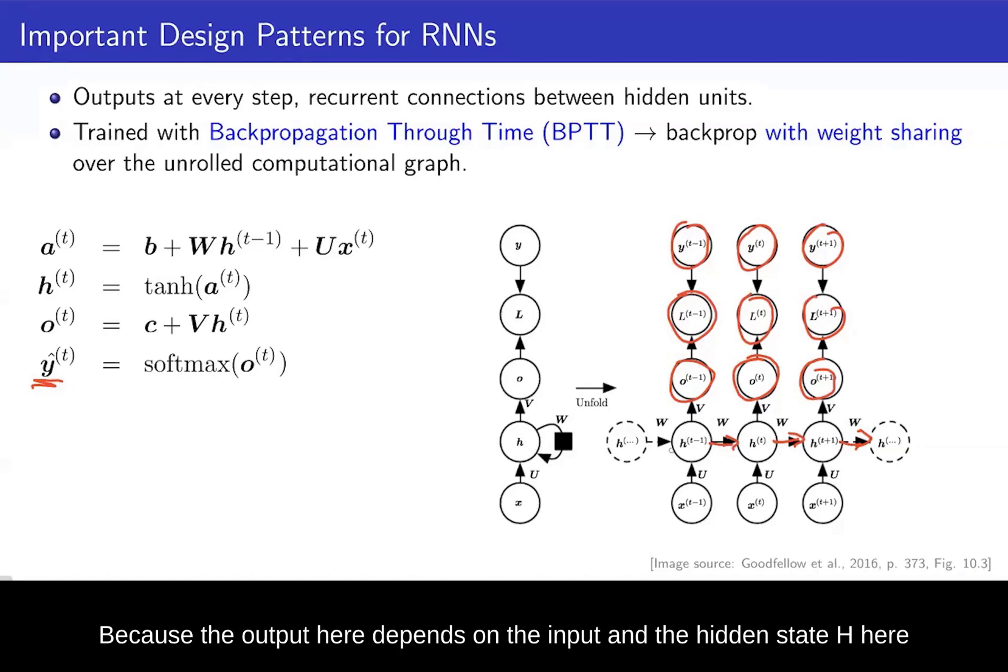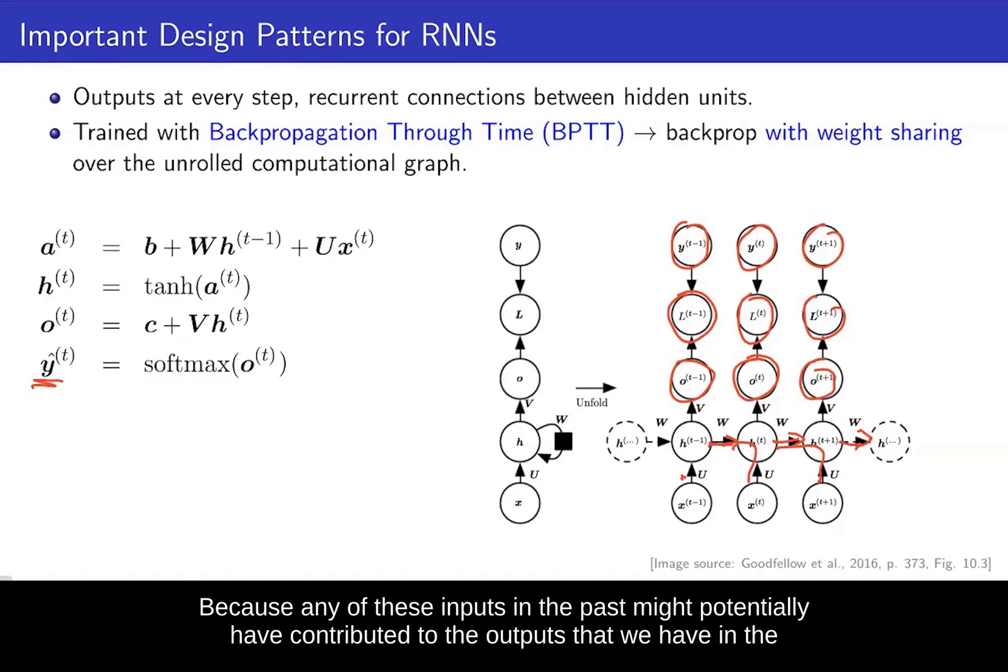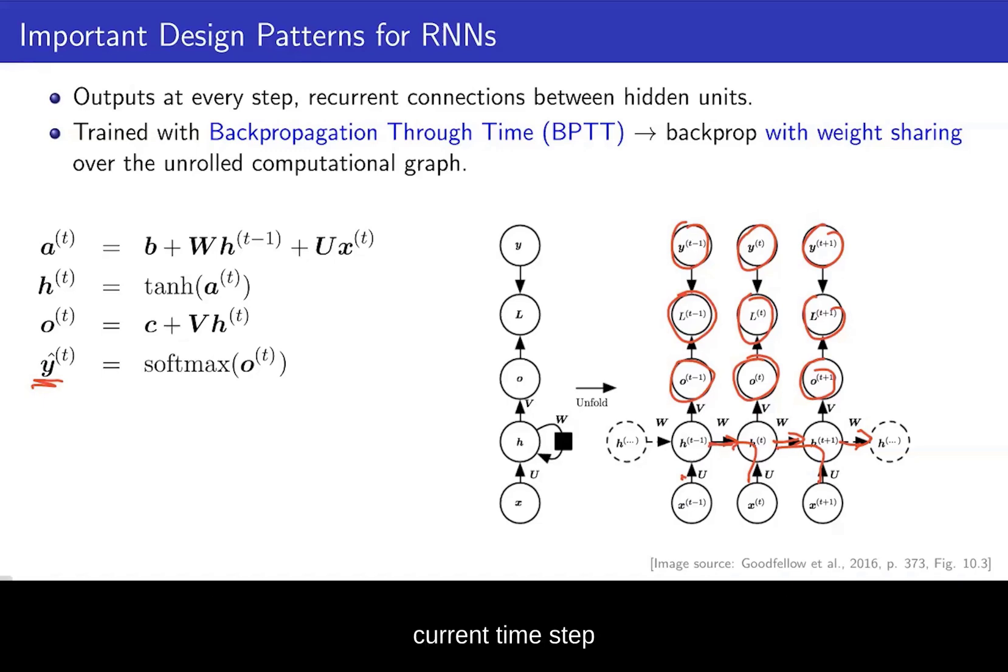We backprop through this whole chain that you see here. So because the output here depends on the input and the hidden state H, if you want to adjust our input weights U, we have to compute what the partial derivative of the loss with respect to H is. And as we go through time, we have to consider longer and longer chains, because any of these inputs in the past might potentially have contributed to the outputs that we have in the current time step.